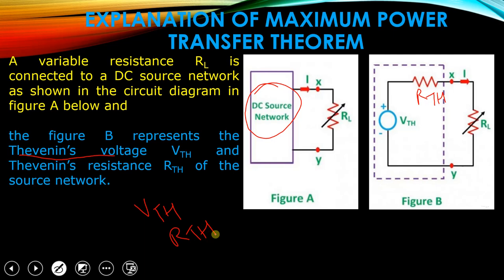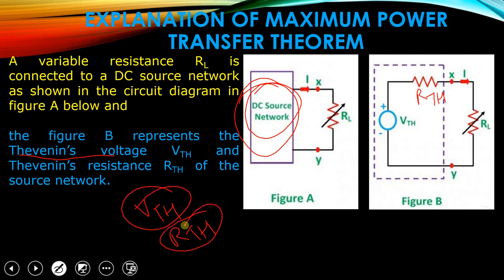The whole complicated circuit is replaced by a single voltage source known as the Thevenin voltage source and an equivalent resistance known as Thevenin's resistance. So we replace this DC source network with Vth and Rth, keeping the variable load resistance connected as it is.